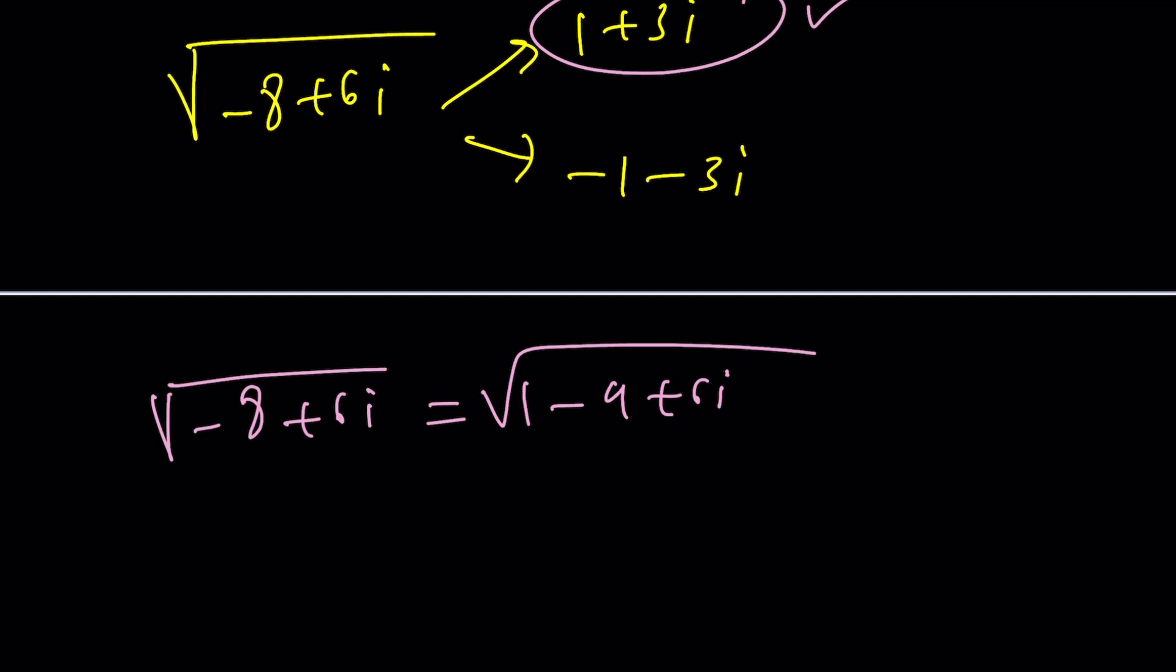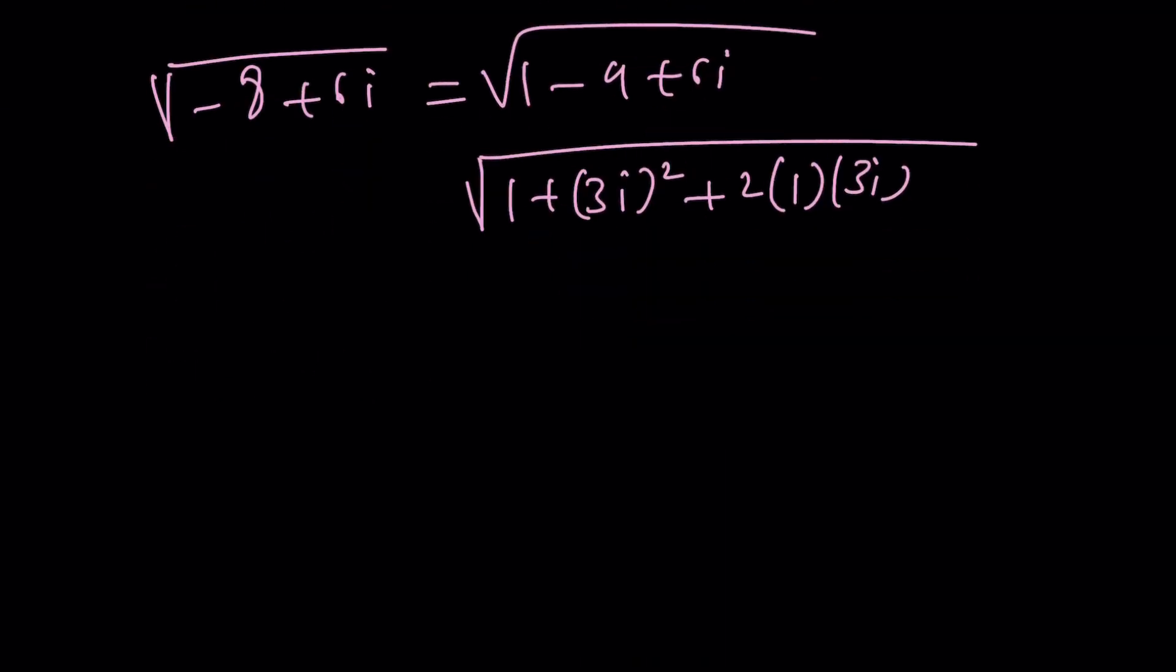We can write this as one minus nine plus six i. And then minus nine can be written as the square of three i. And this can be written as two times one times three i. You get the idea? This gives us a perfect square, which is one plus three i quantity squared. And you have to square root it, which gives us one plus three i.